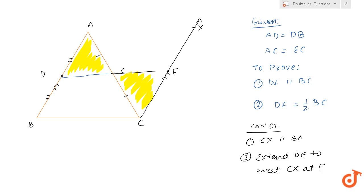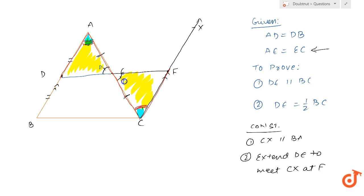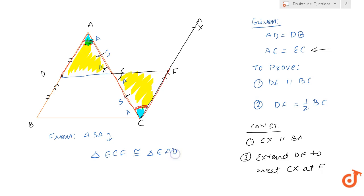How do I prove congruence? These two angles are equal because they are vertically opposite angles. AE is equal to EC — it is given, because E is the midpoint of AC. And also these two angles will be equal because they are alternate interior angles. So I have angle, then side, then angle — ASA. From ASA, I can say that triangle ECF is congruent to triangle EAD.